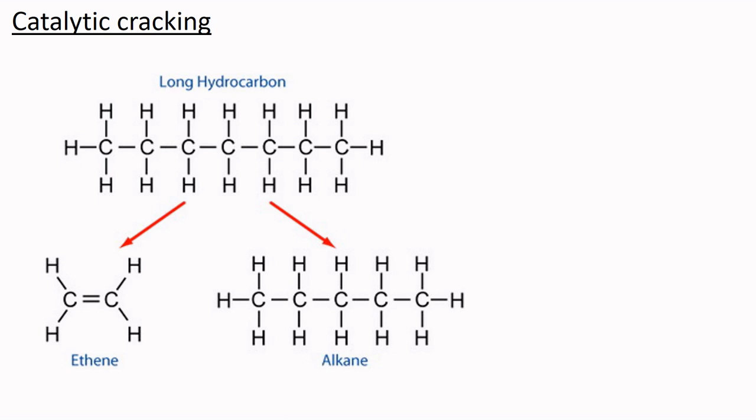So the seven carbon heptane has the formula C7H16. One of the products is pentane with five carbons and 12 hydrogens. That leaves us left with two carbons but only four hydrogens.